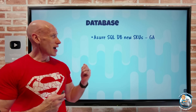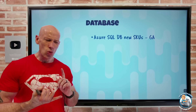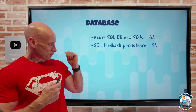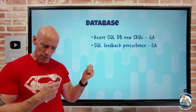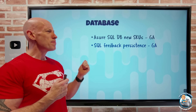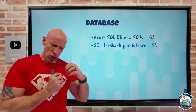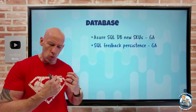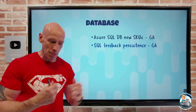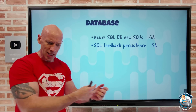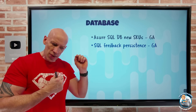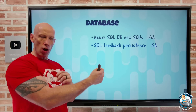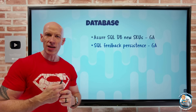On the database side, Azure SQL Database has some new SKUs in GA — specifically a new 128 vCore option for the standard series hardware. Also, for Azure SQL Database and Azure SQL Database Hyperscale, there's memory grant feedback persistence. A query executes with a certain memory grant — if it's too large it inhibits parallelism and impacts performance; if it's too small, things spill out to disk, which is a costly operation. This feature remembers the memory needs of prior executions and adjusts the grant accordingly to optimize memory allocation.